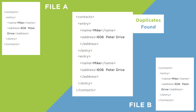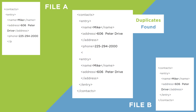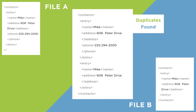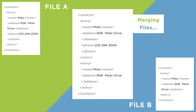Or it could be a bit more complicated because the records in the two files contain different information. Perhaps Mike's phone number is only in one file and we want that information merged. Then we need to do a more detailed comparison as we do the merge.